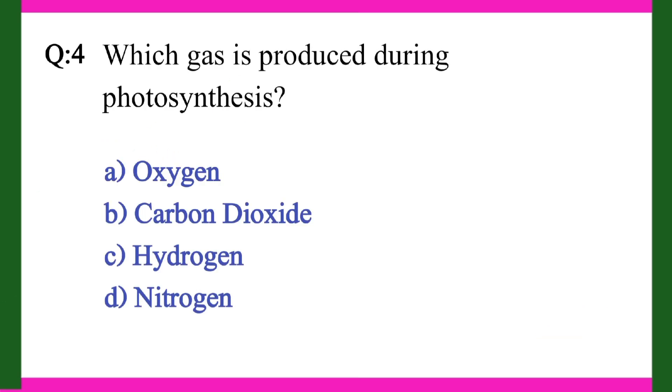Question 4: Which gas is produced during photosynthesis? Right answer is A, Oxygen.